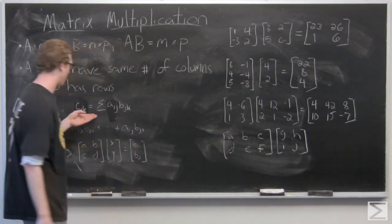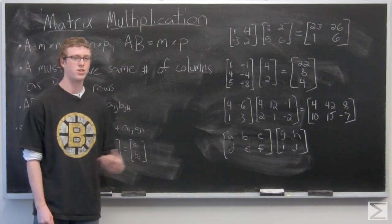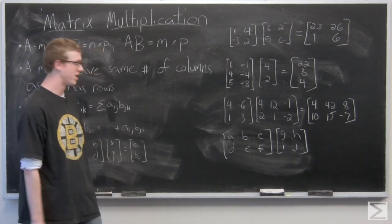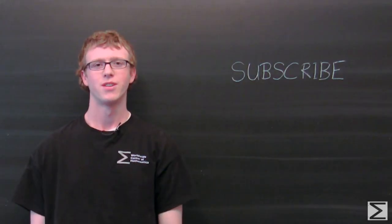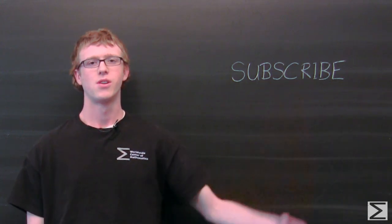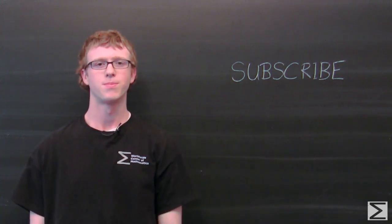And just remember this formula: CIK equals the sum of AIJ BJK. Thank you for watching. For more math videos please subscribe to our YouTube channel here or for additional resources including affordable digital textbooks please visit centerofmath.org.